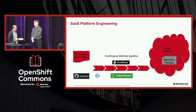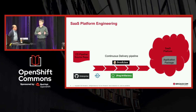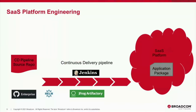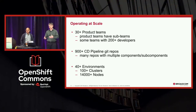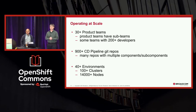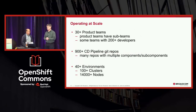From a product team perspective, all the products we support within Broadcom just need to focus on their continuous delivery pipeline — they describe how their application is going to be deployed and it goes into the SaaS platform. We're doing this for 30 different product teams, some with different sub-teams, lots of developers, a whole bunch of different CD pipelines, with over 7,000 regular jobs running on average per day.